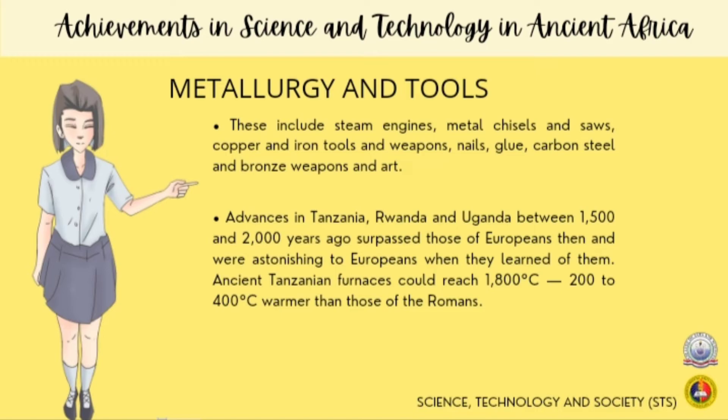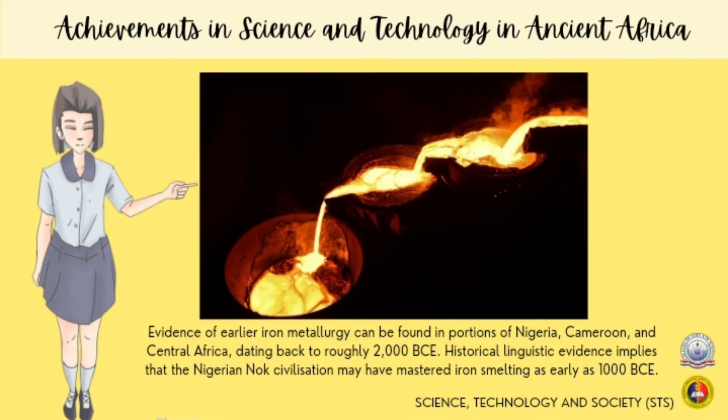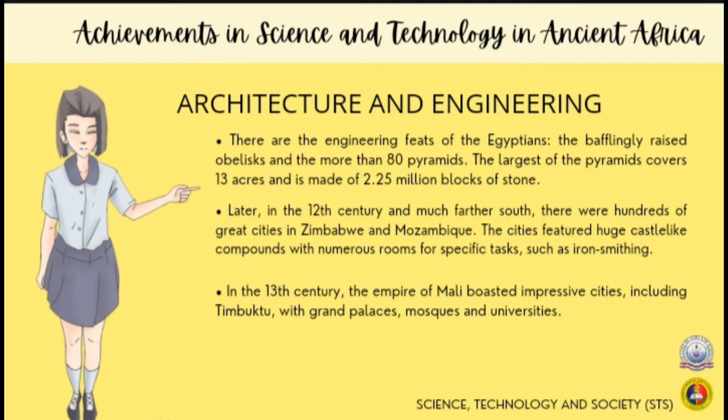Many advances in metallurgy and tool-making were made across ancient Africa. This includes steam engines, metal chisels and saws, copper and iron tools and weapons, nails, glue, carbon steel, and bronze weapons and art. Evidence of iron metallurgy can be found in portions of Nigeria, Cameroon, and Central Africa dating to 2000 BC.